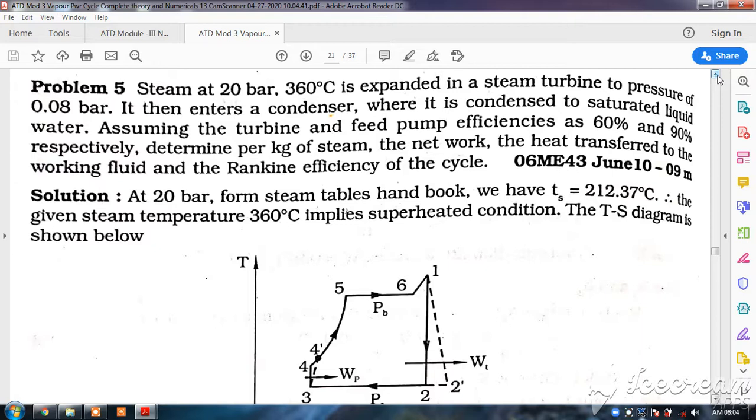Assuming the turbine and feed pump efficiencies as 60% and 90% respectively, determine per kg of steam the network, the heat transfer to the working fluid and the Rankine efficiency of the cycle. This was asked in JNTU exam.